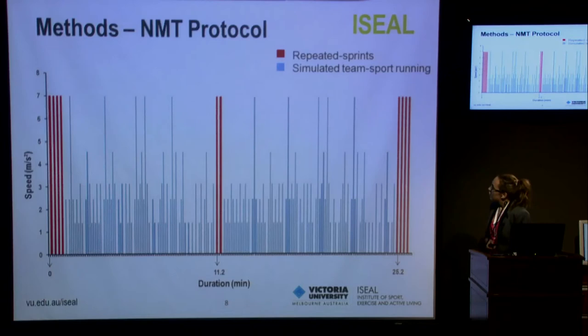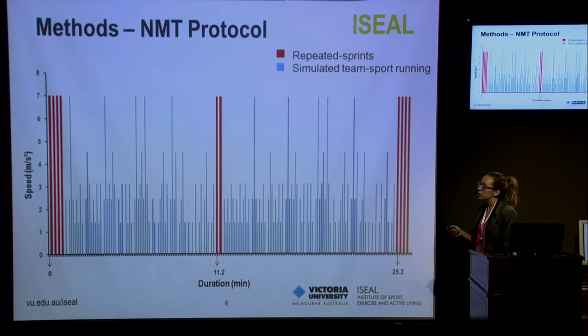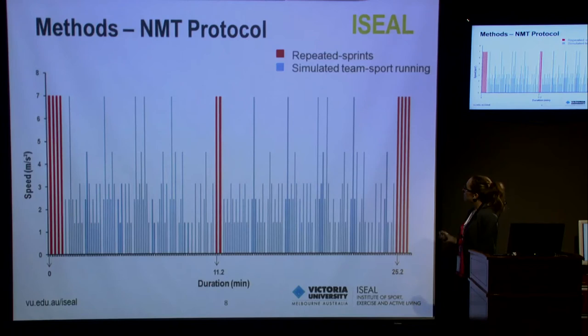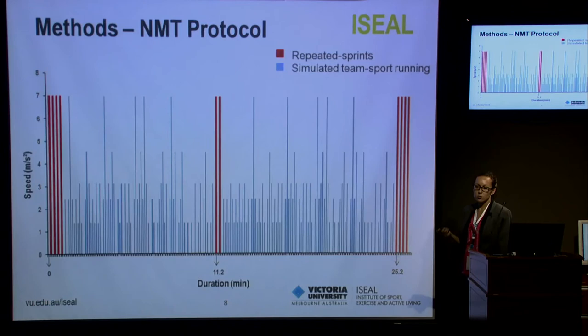The protocol was 26.4 minutes in duration and consisted of three sets of repeated sprints. Each sprint lasted four seconds and was separated by 14 seconds of passive recovery. Sets one and three consisted of four sprints, and set two consisted of two sprints, with a two-minute rest period following the final sprint in set two. In between each set of sprints was activity at various velocities designed to simulate the running experience during team sport matches, including single sprint efforts, fast running, jogging, walking and standing.